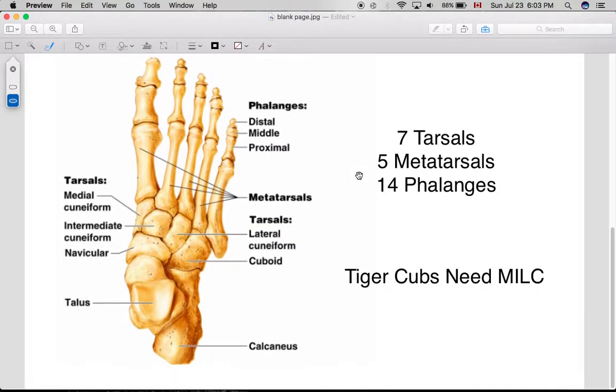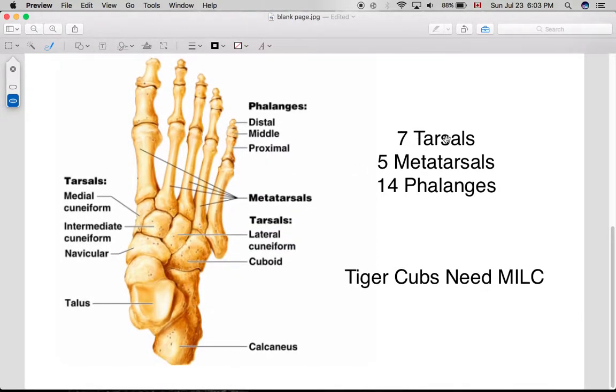Now onto the tarsal, the foot bones. There are seven tarsals, five metatarsals, and 14 phalanges, so very similar to the hand.